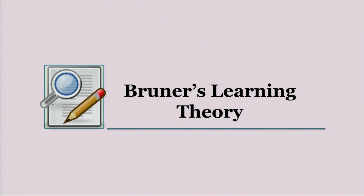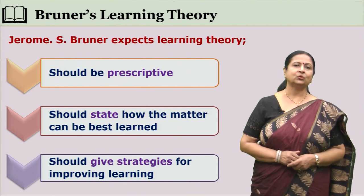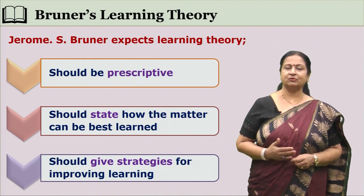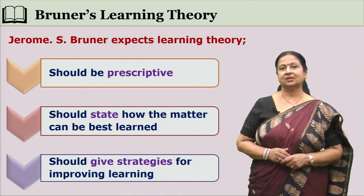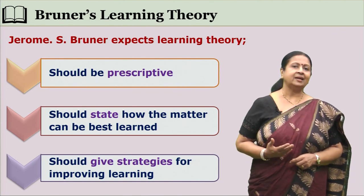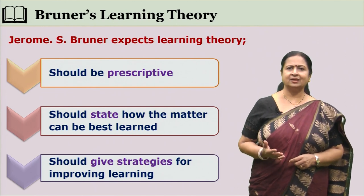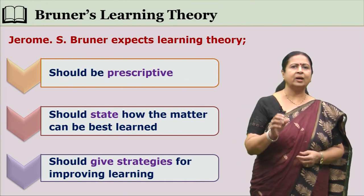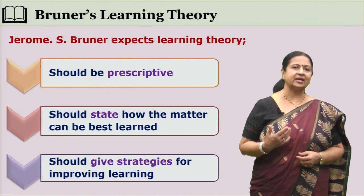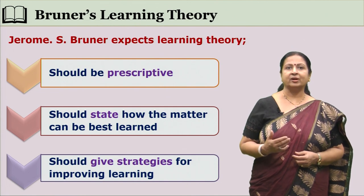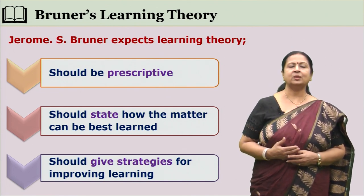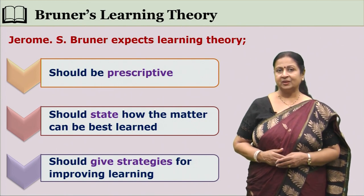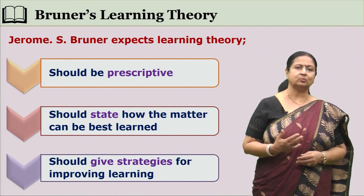Jerome Bruner, in his Discovery Approach to Learning, prescribes certain tips for teachers to enable learners to attain concepts. According to him, a learning theory cannot just explain how learning takes place — it has to be prescriptive, stating how a particular matter can be best learned and giving strategies for improving learning. Both Ausubel and Bruner have given prescriptions for effective learning: while Ausubel focused on concept formation, Bruner focused on concept attainment.